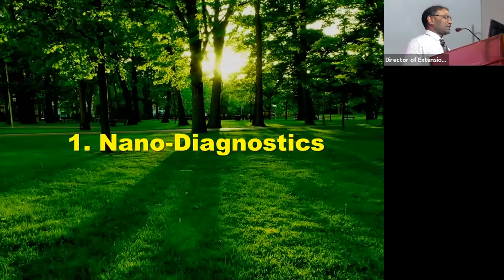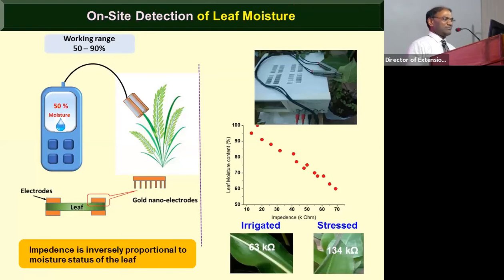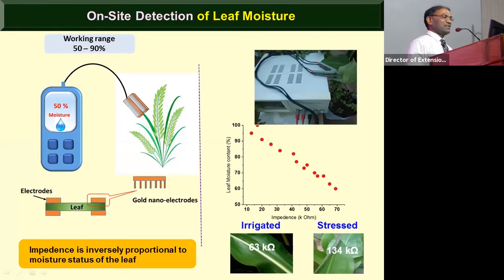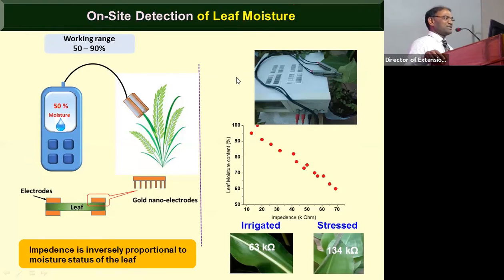Nano diagnostics is the number one priority. For agriculture officers and agriculture subjects generally, diagnostics must come first. I always say that agriculture is a subject of confusion — we confuse a lot, we learn a lot of confused things, and we make sure that the farmers get confused too.